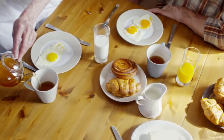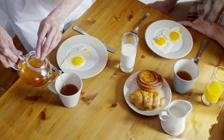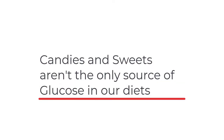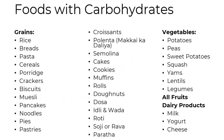Carbohydrates are found in many, many foods. You probably don't even realize how many foods have carbohydrates in them. If you're trying to avoid carbohydrates, sugars and candies aren't the only places carbohydrates are coming from. A lot of grains like rice, bread, pasta, cereal, porridge, crackers, biscuits, pancakes, noodles, pastries, croissants, suji, parathas, dosas — all of these have natural carbohydrates in them.